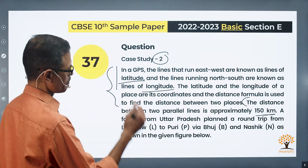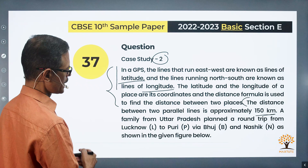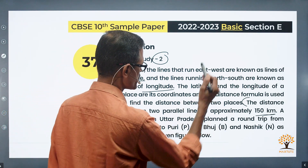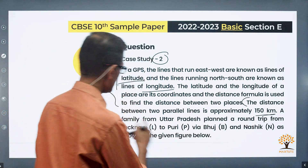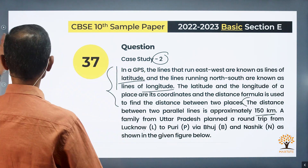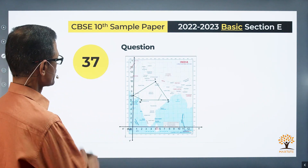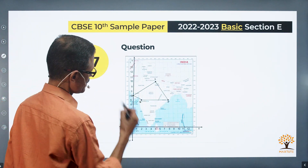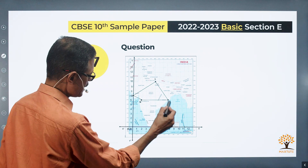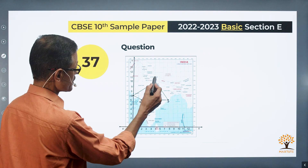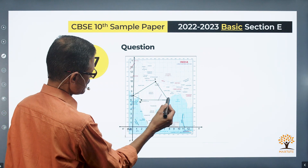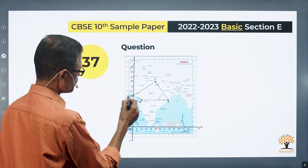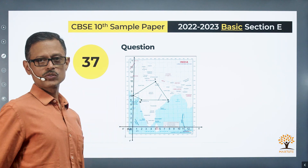A family from Uttar Pradesh plans to do a round trip from Lucknow to Puri via Bhuj and Nashik as shown in the given figure. So this is the figure we have. This is Lucknow (L), Puri (P), Nashik (N), and Bhuj (B).